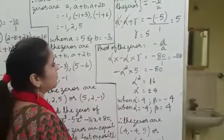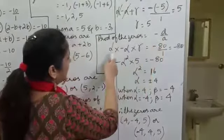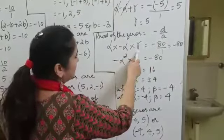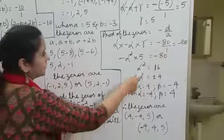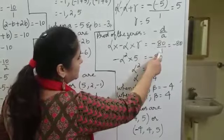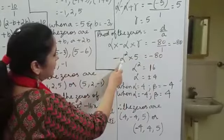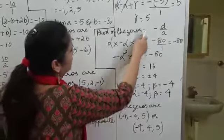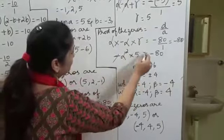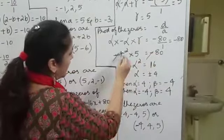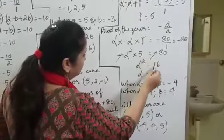Now, the product of the zeros of a cubic polynomial is minus D by A. So alpha times minus alpha times gamma equals minus 80 divided by 1, which is minus 80. This gives minus alpha squared times 5 equals minus 80. The negatives cancel, so alpha squared equals 80 divided by 5, which is 16.